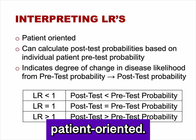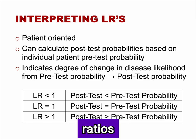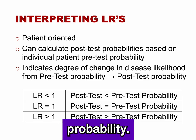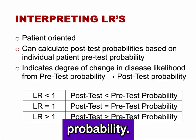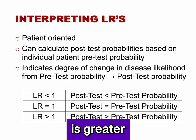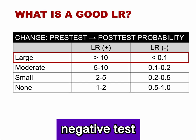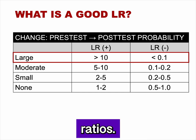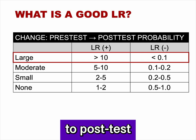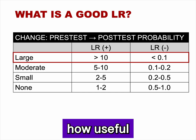Likelihood ratios are patient-oriented. You can calculate the posttest probability of disease based on an individual patient's pretest probability. Likelihood ratios indicate the degree of change in disease likelihood from pretest to posttest probability. When a likelihood ratio is less than 1, posttest probability is less than pretest probability. When equal to 1, posttest equals pretest. When greater than 1, posttest is greater than pretest. In general, a likelihood ratio of a positive test greater than 10 and a likelihood ratio of a negative test less than 0.1 are considered good, though pretest probability and testing/treatment thresholds also influence usefulness.